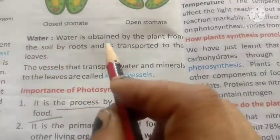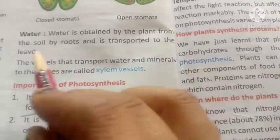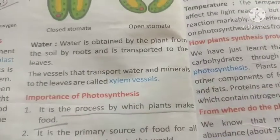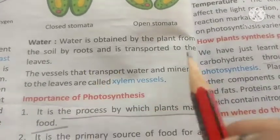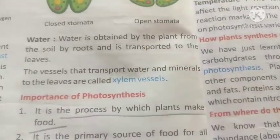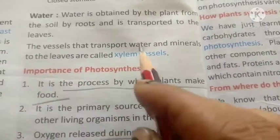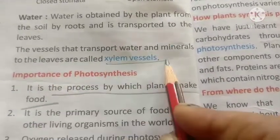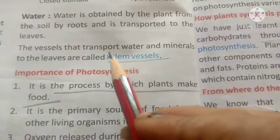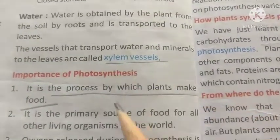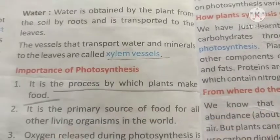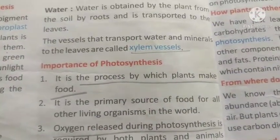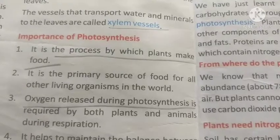Water is obtained by the plant from the soil by roots and is transported to the leaves. The vessels that transport water and minerals to the leaves are called xylem vessels. This is a tissue we have studied previously, made up of cells.